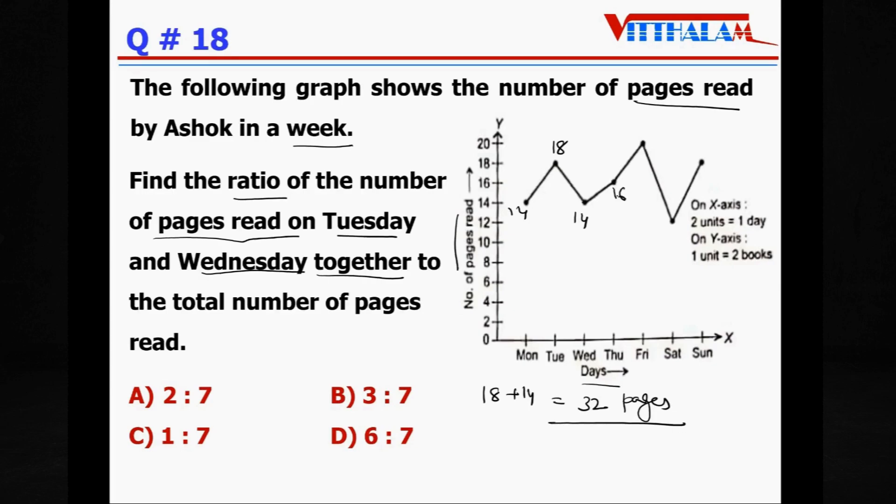On Thursday it is 16, on Friday it is 20, here it is 12, here it is 18. So let's add up. 14, 14 plus 16, 14 plus 16, 30, 30 plus 30, 60, 60 plus 20, 80, 98, 98 and 112.